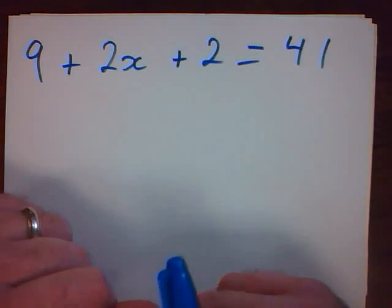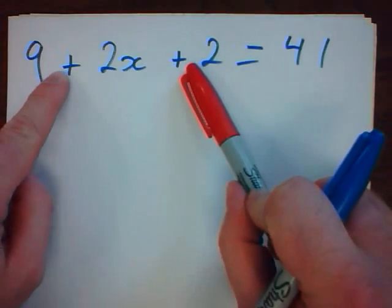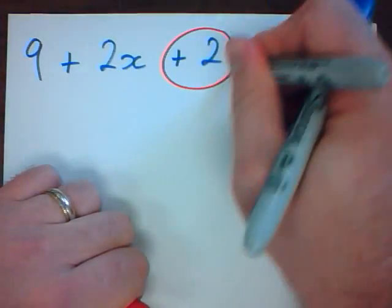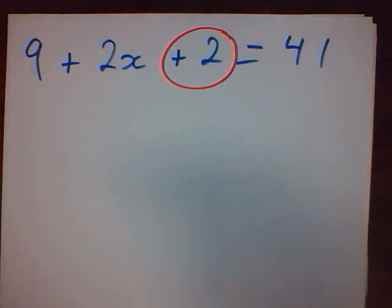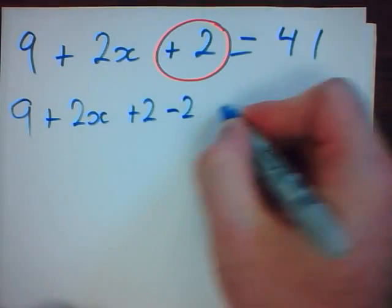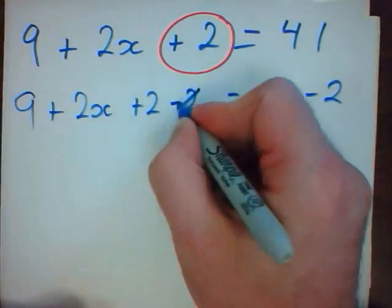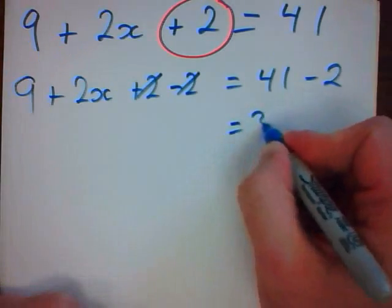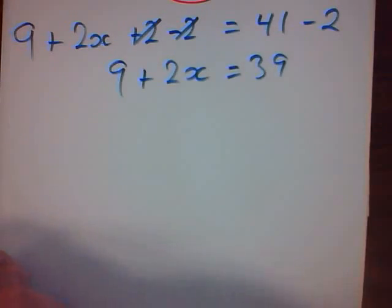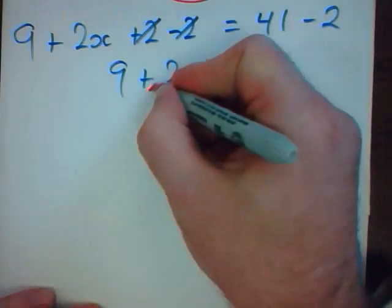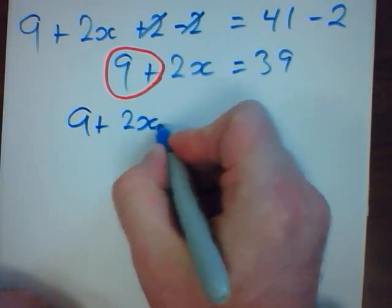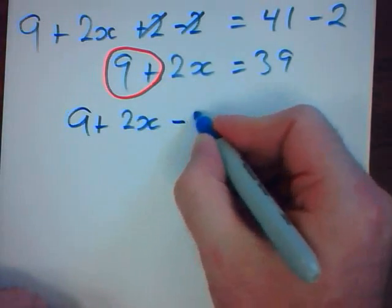So I'm getting rid of subtraction and addition first. I have two additions. Which one do I do? Well, in BEDMAS, I do left to right. Since BEDMAS is backwards, I'll get rid of that one. The opposite of that is subtracting two. Subtracting two. I'm not done. BEDMAS again. Backwards. I'll be getting rid of this one. The opposite of adding nine is subtracting nine.